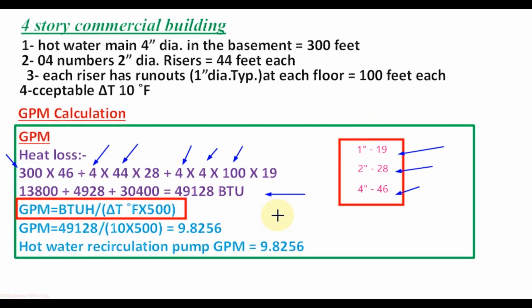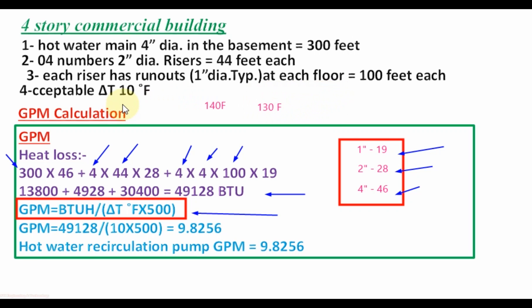For calculation of GPM we use the formula: GPM = total heat loss in BTU per hour divided by (delta T × 500). The electric water heater supplies hot water at 140°F and the required minimum temperature at the last fixture is 130°F, so the delta T value is 10°F. Applying these values — total heat loss 49,128 BTU and delta T of 10 — we get GPM equal to 9.8256. So we need a hot water recirculation pump with a flow rate of 9.8256 GPM.